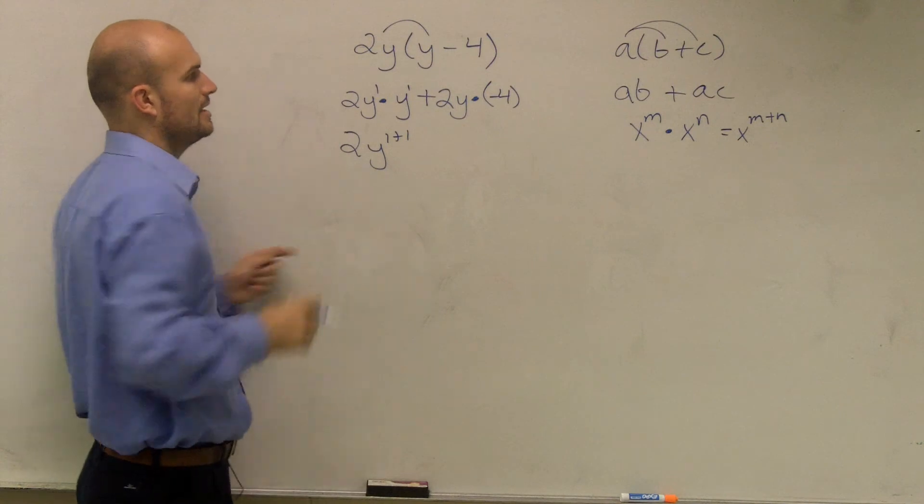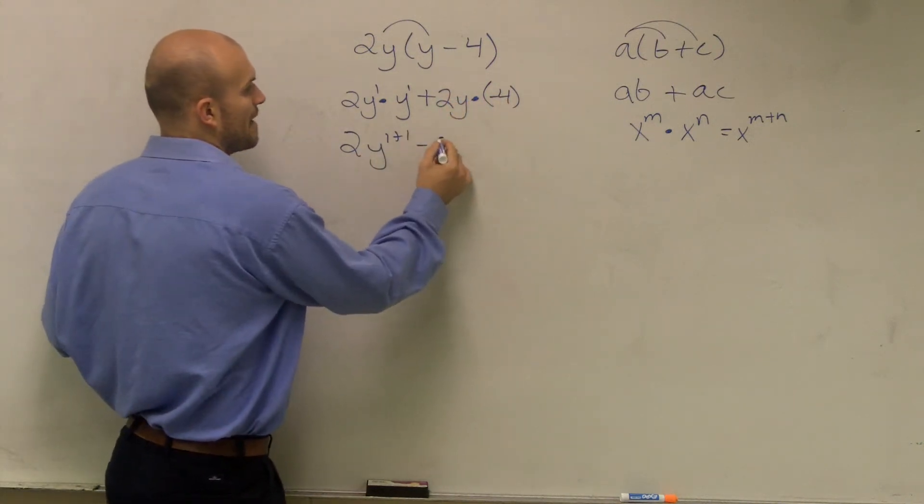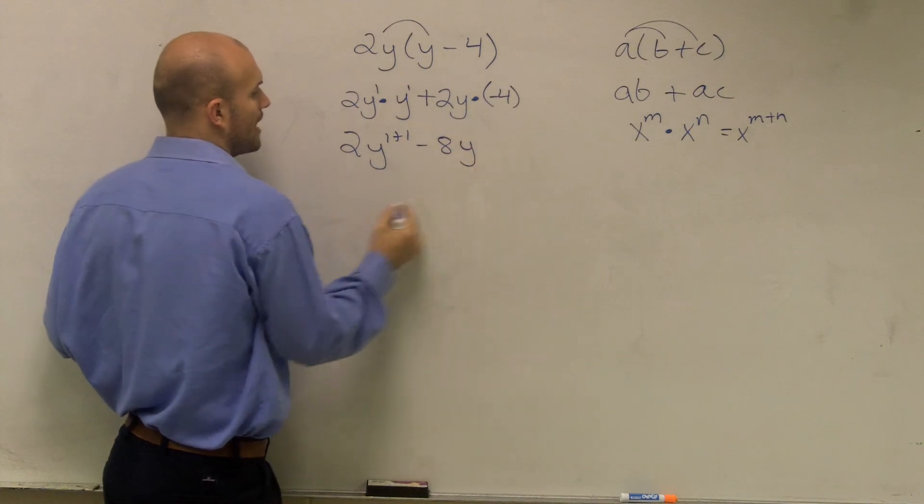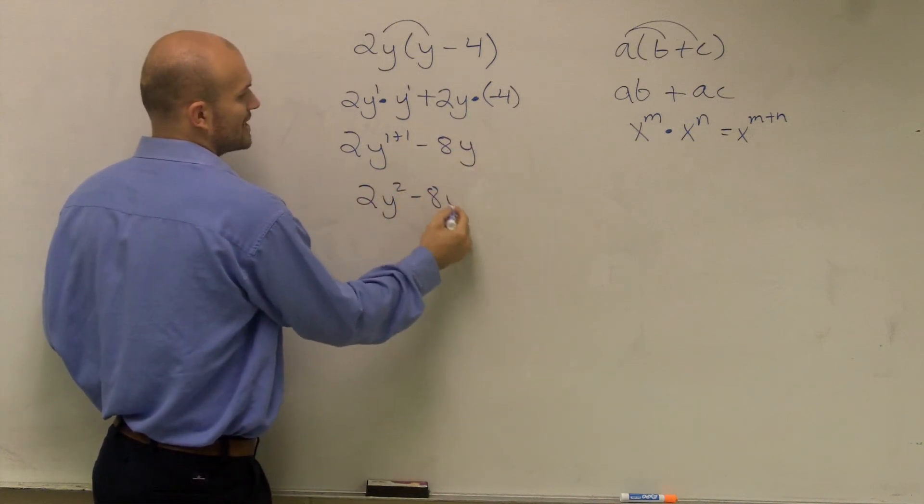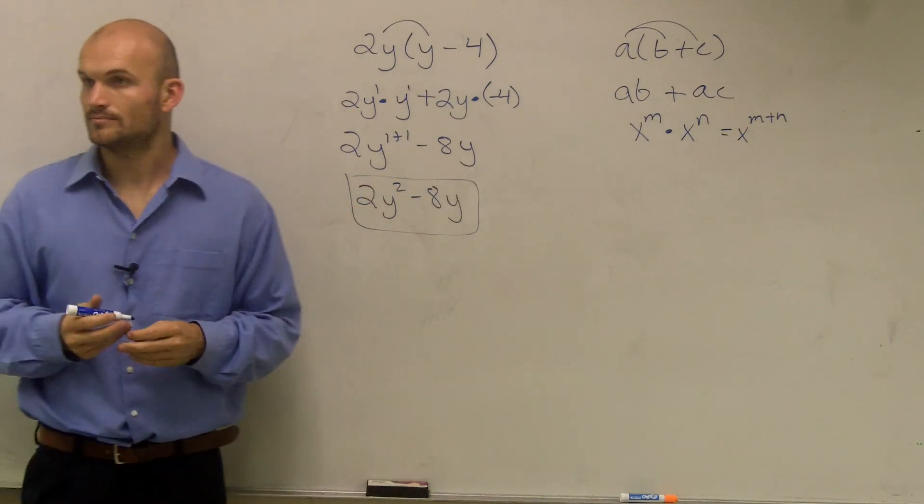Here, I don't have another y, so I just simply multiply my numbers, which will provide me with a negative 8y. 2y squared minus 8y. Done. Got it?